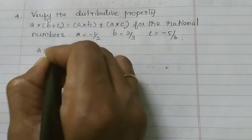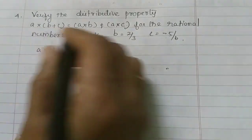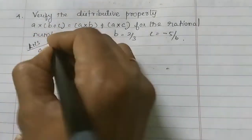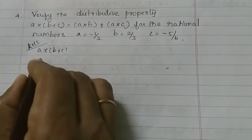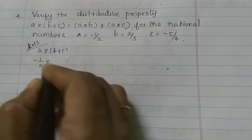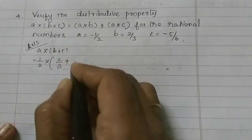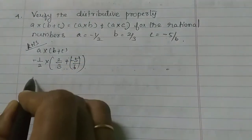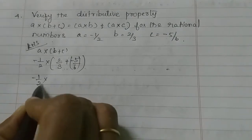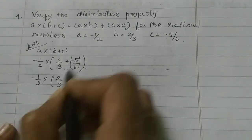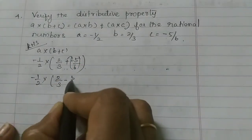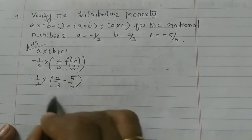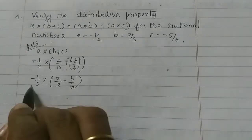So A into B plus C — that is the left hand side of the distributive property. For the left hand side, A is minus 1 by 2, B is 2 by 3, plus C is minus 5 by 6. Now, minus 1 by 2 into 2 by 3, and plus into minus gives minus 5 by 6. Now we can solve the bracket. We multiply minus 1 by 2.